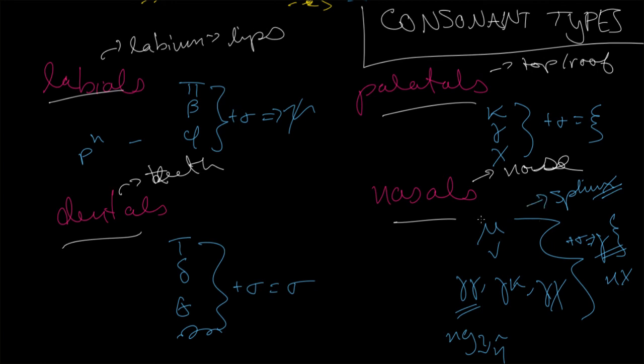So join me in the next episode. We're going to be talking about the third declension nouns, ending either kappa or tau. K-rux for herald, and then soma for body. Lots of interesting things to say. We'll see you then.